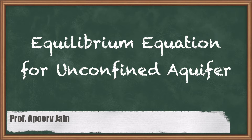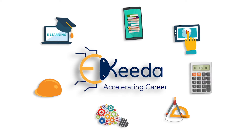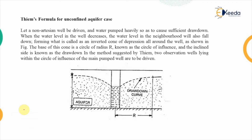Hello everyone. In this video we are going to study about the equilibrium equation for the unconfined aquifer. An aquifer is a geological formation which retains water and yields it in sufficient quantity. To extract water out of these natural geological formations, we require different types of construction techniques, the most important of which is the well. These wells are used for a number of different applications.